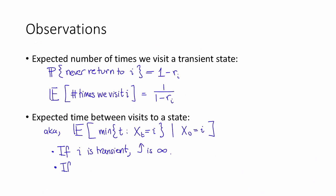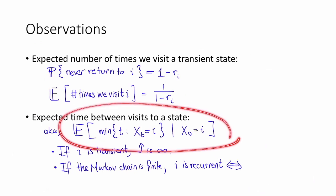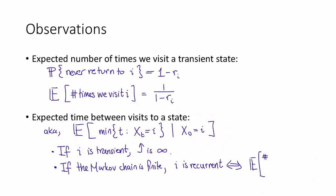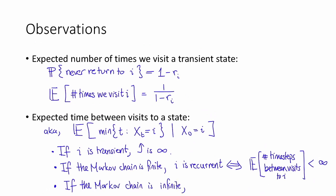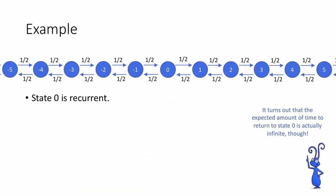On the other hand, if the Markov chain is finite — meaning it has a finite number of states — then state i is recurrent if and only if this expected number of time steps between visits is finite. If the Markov chain is infinite, meaning it has an infinite number of states, then something different might happen. To see how this might play out, let's look at an example.